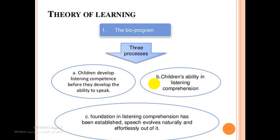The second process: a child's ability in listening comprehension is acquired because children are required to respond physically to spoken language in the form of parental commands. The third process of this hypothesis is that once the foundation in listening comprehension has been established, speech evolves naturally and effortlessly out of it.